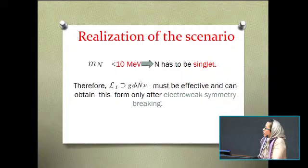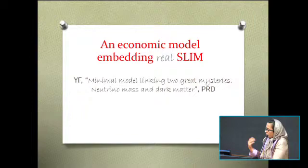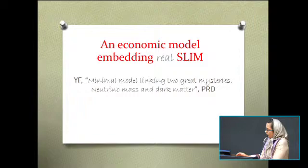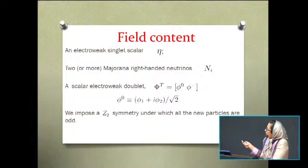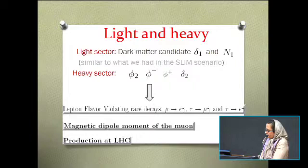So this Lagrangian that we started with should be only effective and can be valid only below electroweak symmetry breaking scale. Here in this paper, I suggested a model that embeds the scenario within it and is electroweak invariant. To do so, I promoted the SLIM particle to a doublet which mixes with a singlet scalar. Again, there is this Z2 symmetry under which the new particles are odd.